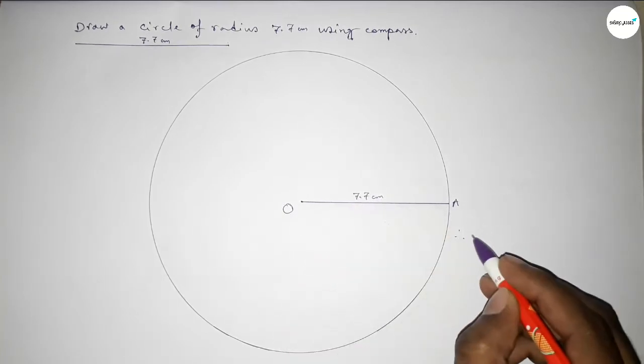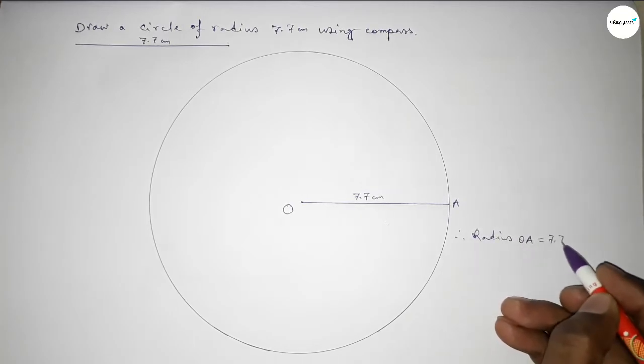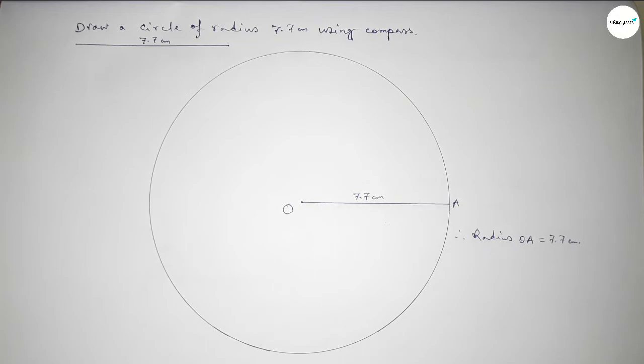Therefore, radius OA equals 7.7 centimeters. That's all, thanks for watching. If this video is helpful to you, then please share it with your friends and please like the video. Thanks for watching.